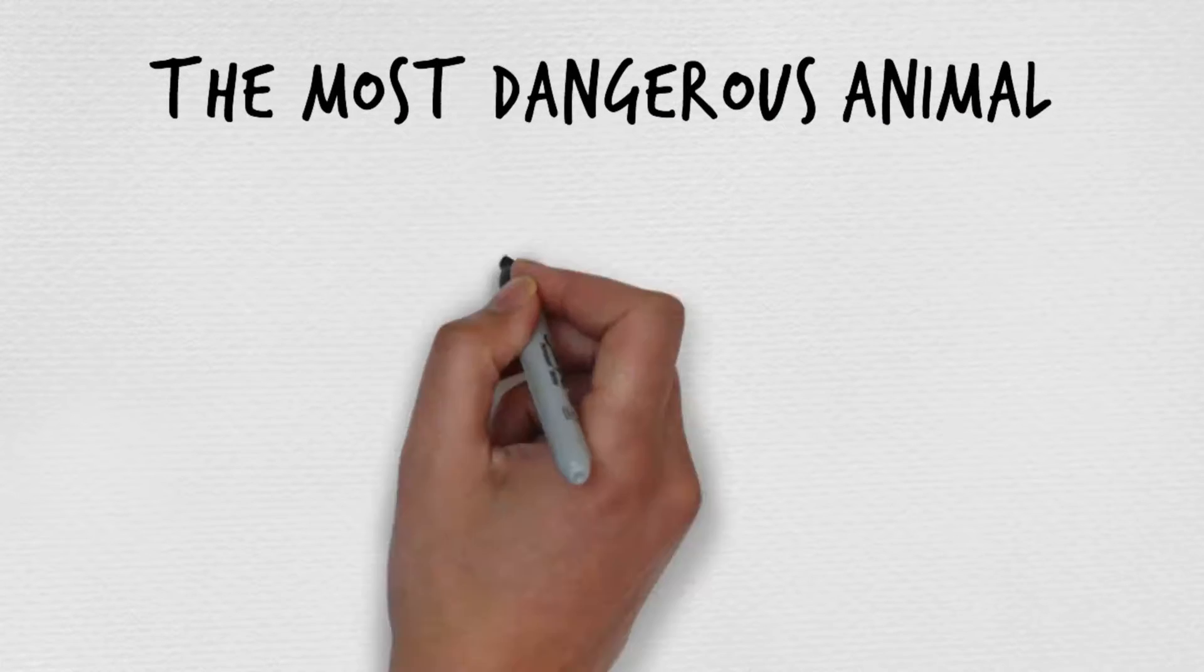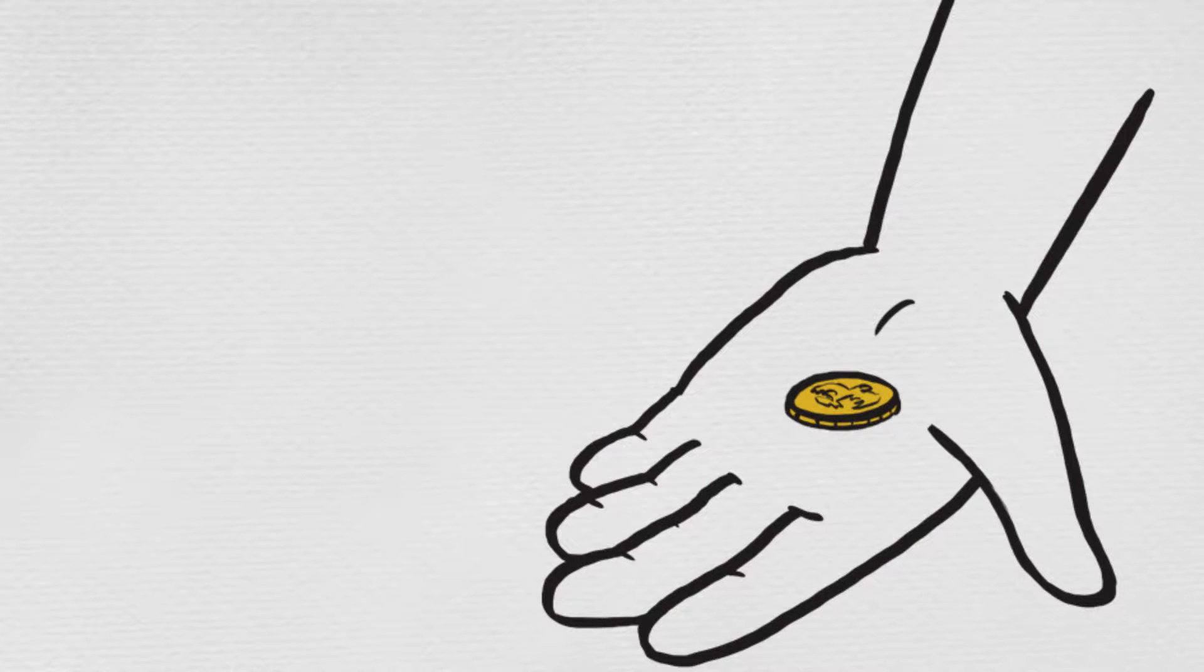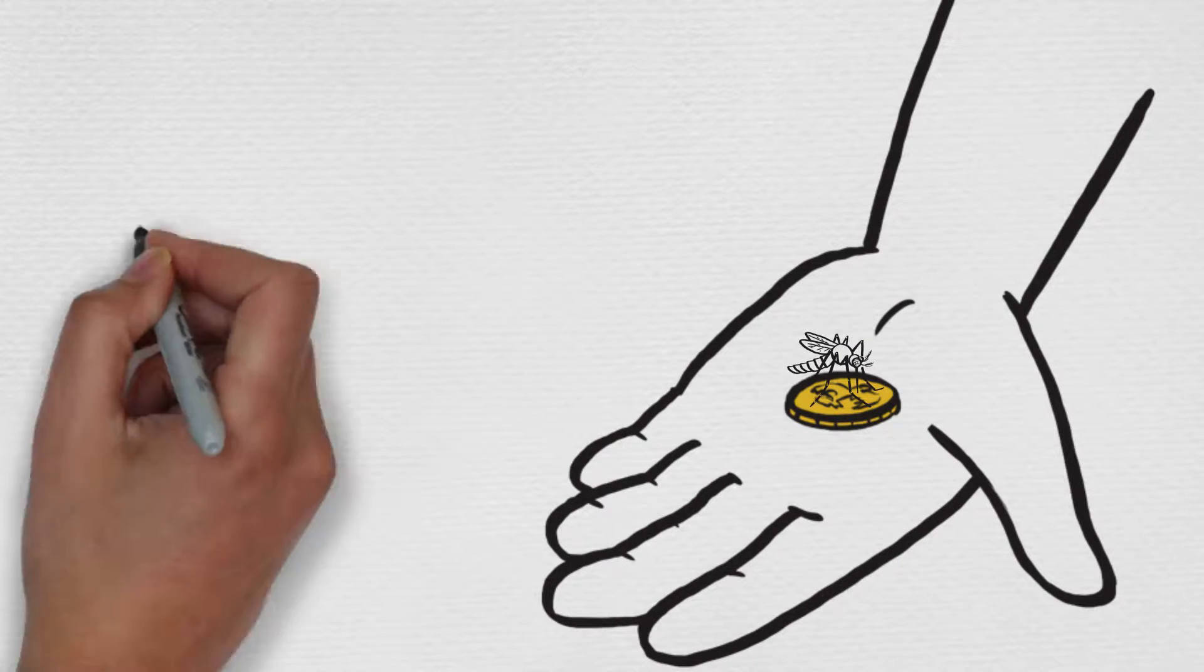The most dangerous animal in the world doesn't have fangs or claws. In fact, it is smaller than a coin in your pocket. It's the mosquito.